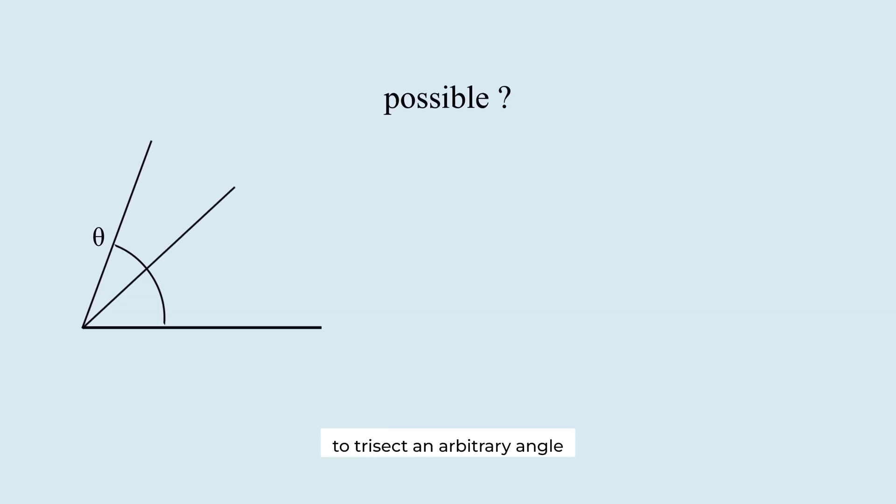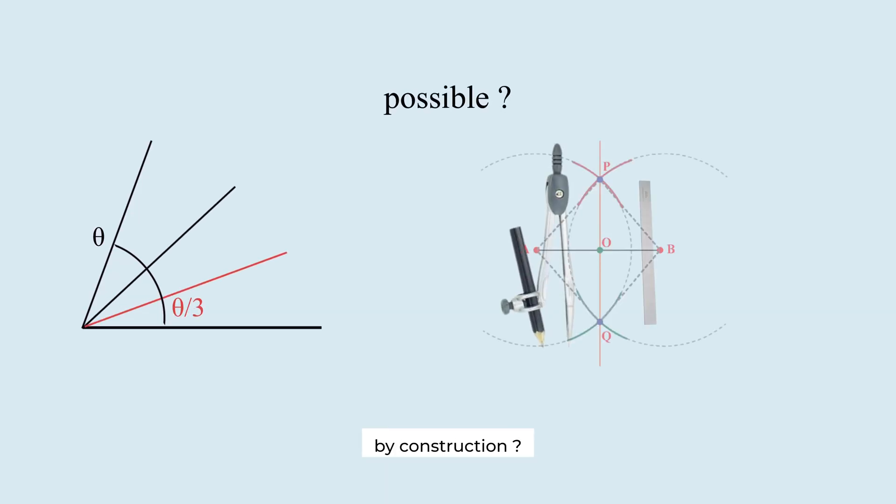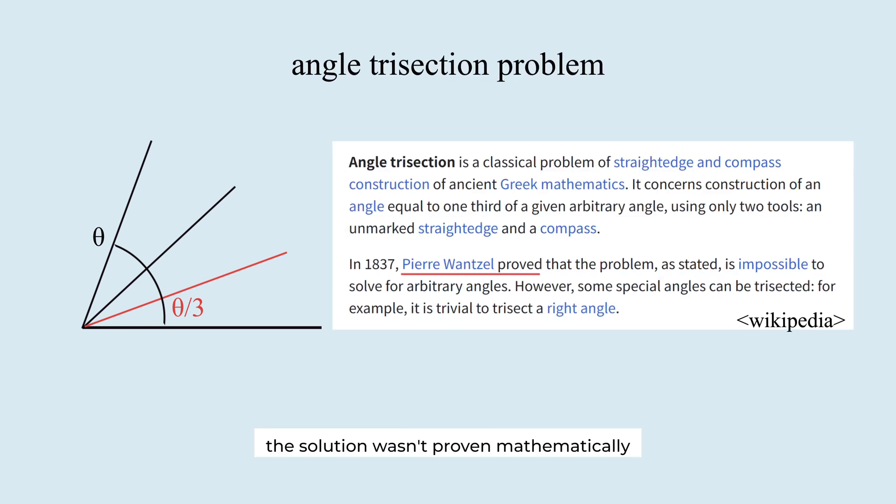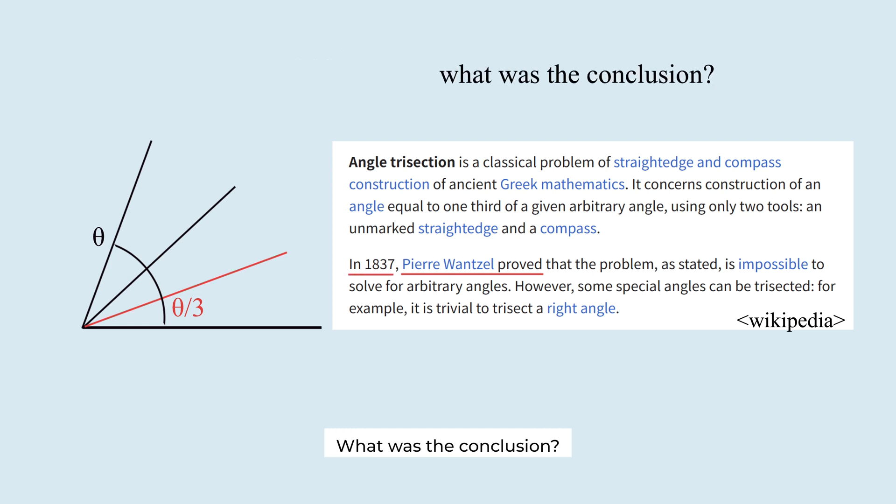Is it possible to trisect an arbitrary angle by construction? This question goes back to ancient Greece. However, the solution wasn't proven mathematically until the 19th century. What was the conclusion? What main idea was used in the proof?